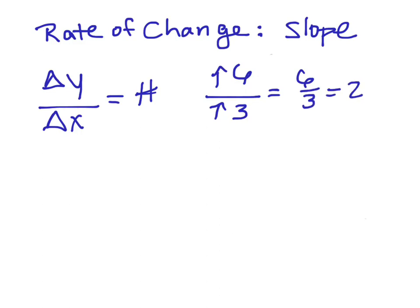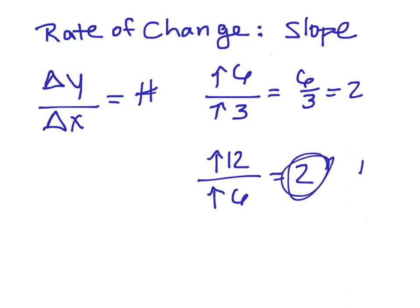This constant rate of change holds even if we look at different values. If Y increases by 12 and X increases by 6, that's the same rate of change — 12 to 6 is the same as 6 to 3. Or if the Y value increases by 2 and the X variable increases by 1, that's still the same rate of change of 2.